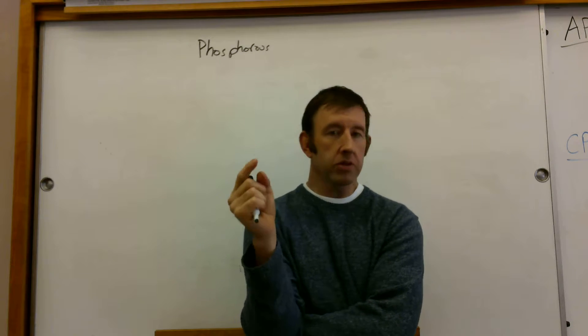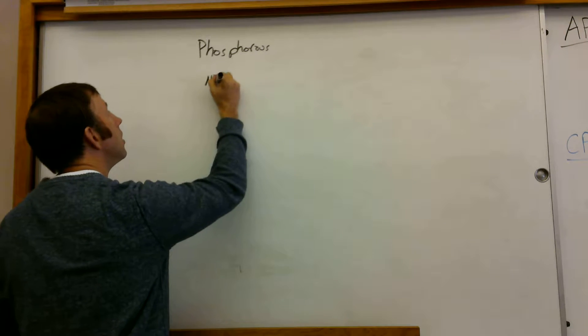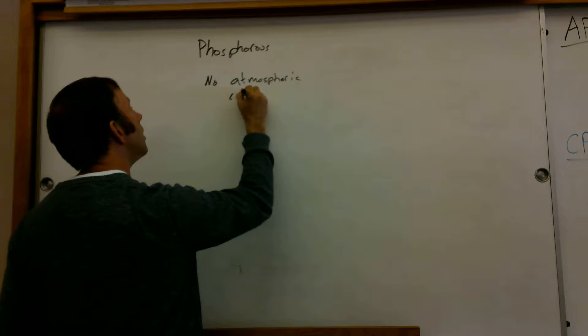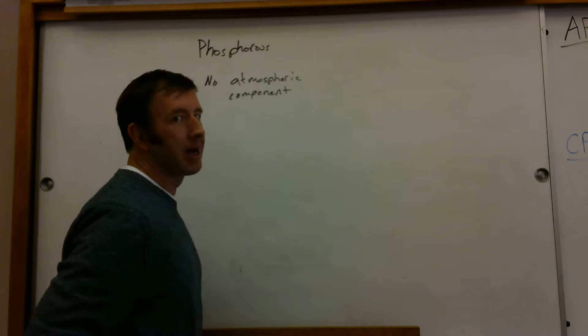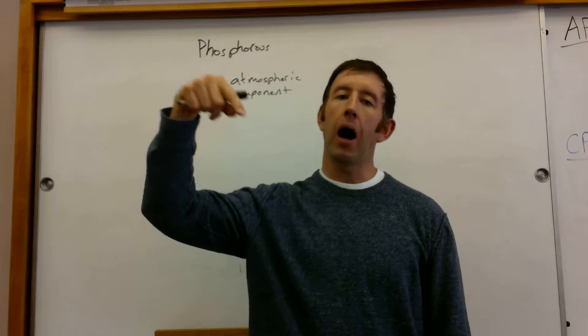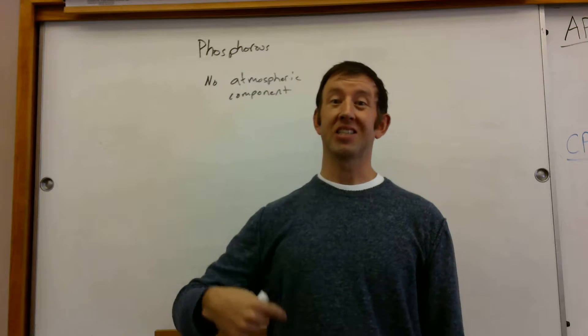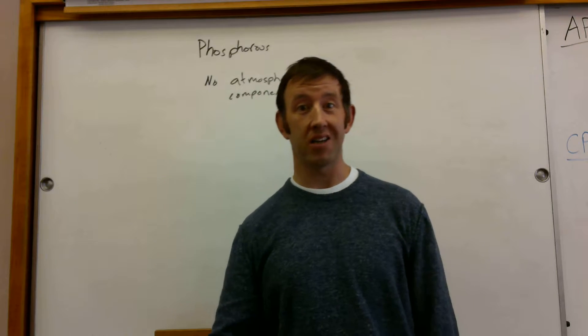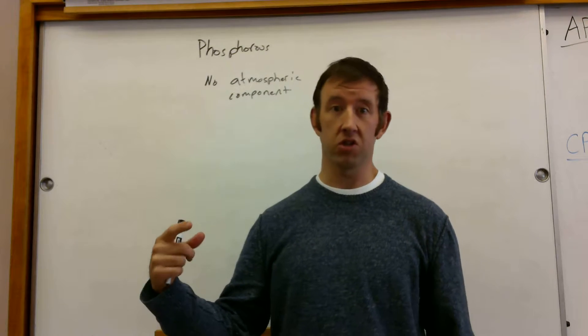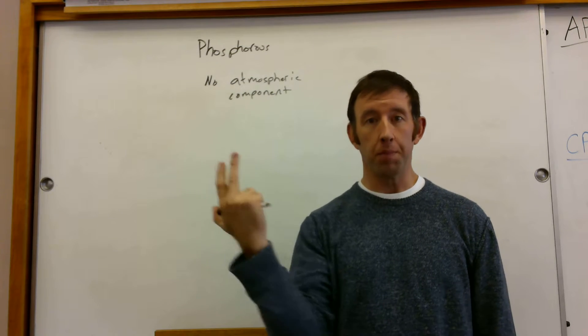Some important differences between the phosphorus cycle and the other cycles is there's no atmospheric component. And part of the reason that's so important is because it doesn't end up going through the atmosphere, the external large cycle is extremely slow because it's reliant on tectonic processes, which take millions and millions of years to occur. So where do we get our phosphate or phosphorus from in the phosphorus cycle?